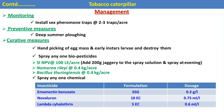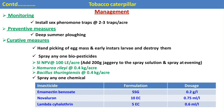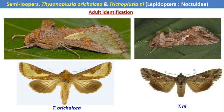We can also spray the crop with different biopesticides such as SLNPV (Spodoptera litura Nuclear Polyhedrosis Virus), an effective entomopathogenic virus. Nomuraea is an effective entomopathogenic fungus. Bacillus thuringiensis is an effective entomopathogenic bacterium. Emamectin benzoate, novaluron, and lambda-cyhalothrin are the different chemical insecticides effective against the tobacco caterpillar in sunflower.